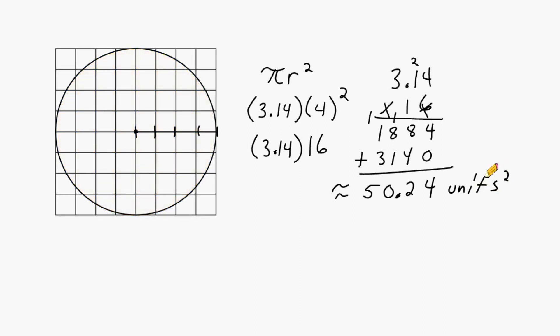Now the only reason I put approximately equal to is because the value for pi, 3.14, is an approximation for pi. So anytime you multiply something by an approximation, the product is going to be an approximation. Alright, let's do another example.